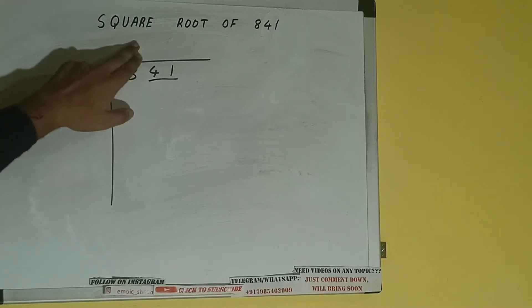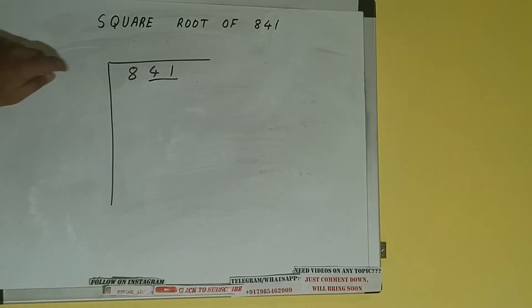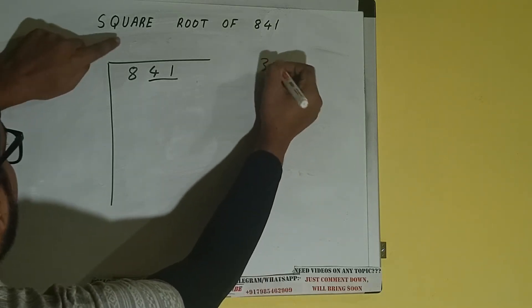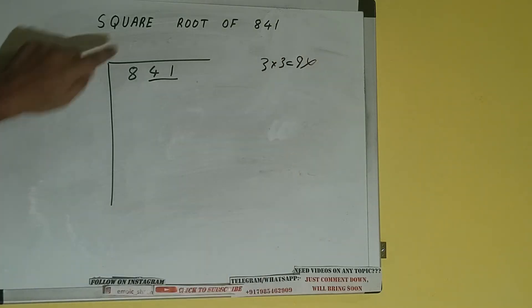The rule is whatever number we write here we have to write here also. If we write 3 here and 3 here it will be 9 which is greater than 8, so we cannot take it.